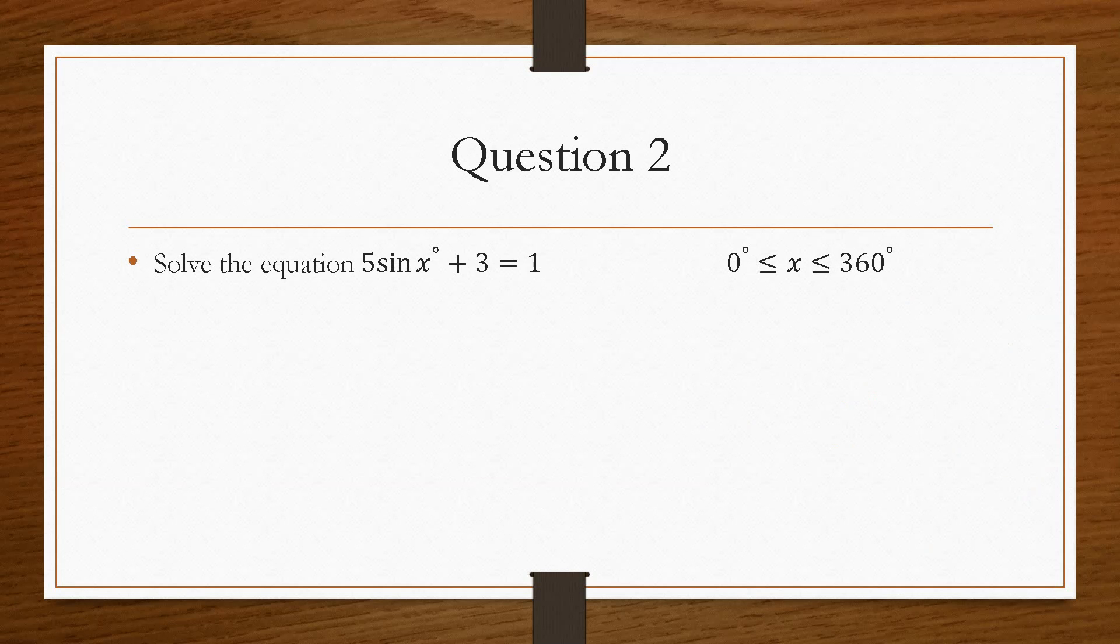Question 2 is exactly the same. However, we just have a little bit more manipulation we have to do first. So the first step is to rearrange for x. So we will bring the 3 across. So that will go over as minus. So it will be 5 sin x equals minus 2. And then sin x equals minus 2 over 5.